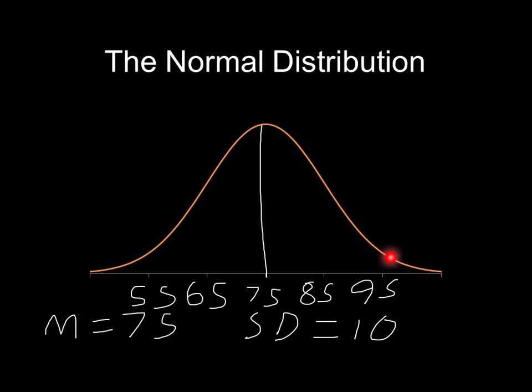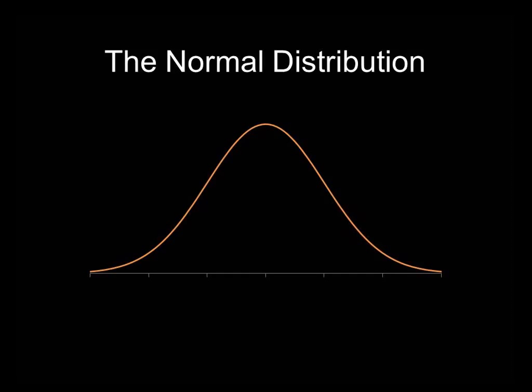And that's how we can start to look at the normal distribution and use it to determine things related to probability. Let's keep in mind that this area under the curve represents the frequency of whatever we're measuring. In this case, test scores.